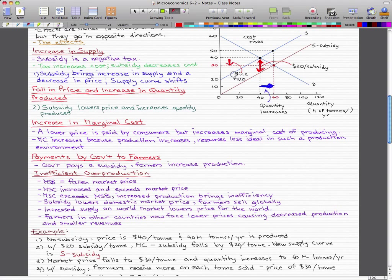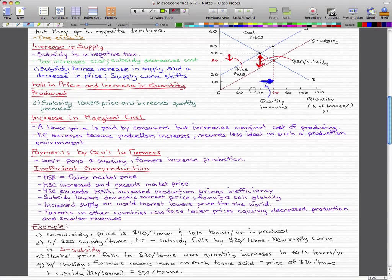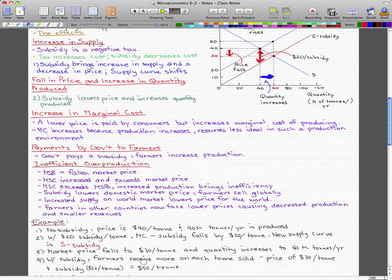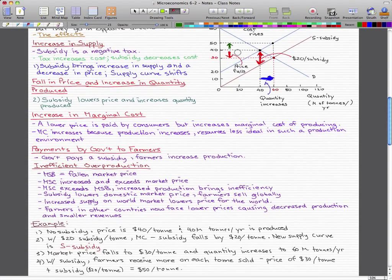The market price falls to $30 per ton, as we see here, and the quantity increases from 40 to 60 million tons per year. With the subsidy, the farmers receive more on each ton sold. The price of $30 per ton plus the subsidy, which is $20 per ton, equals $50 per ton. So what actually happened is, before at equilibrium, we were selling at $40 per ton. With the subsidy, we got to $50 per ton. So farmers receive more on each ton sold.